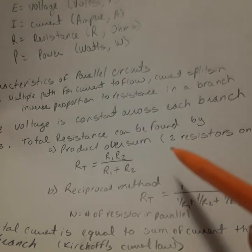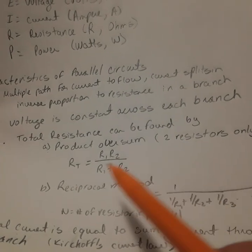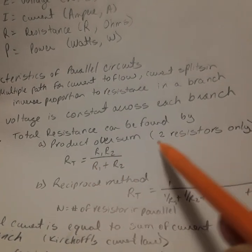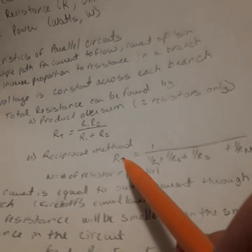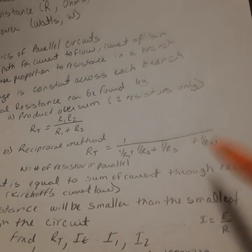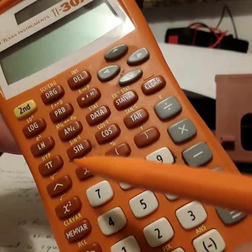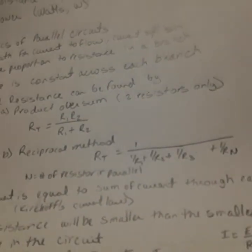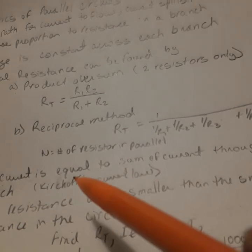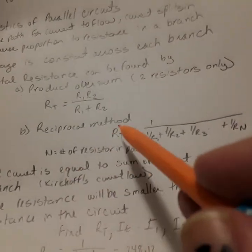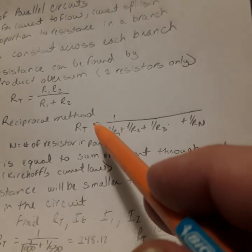Moving on. To find the total resistance, we use two methods: either product over sum (this one applies for two resistors only), or the reciprocal method. This one is very easy with a calculator because of this little function here, x^-1. All you have to do is put the numbers in there and press that button multiple times, and you will get the result.